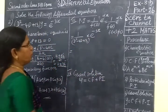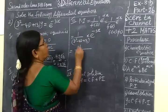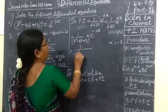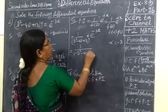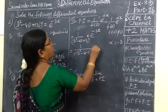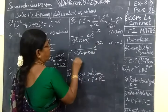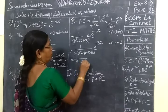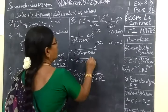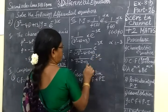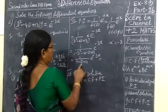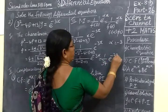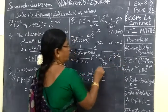1 by minus 3 square minus 4 into minus 3 plus 13, e power minus 3x. This is equal to 9 plus 12 plus 13, e power minus 3x. If we add, we get 34. So 1 by 34 e power minus 3x. This is particular integral.